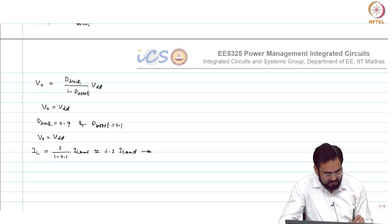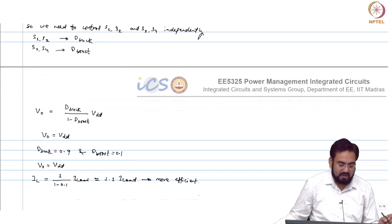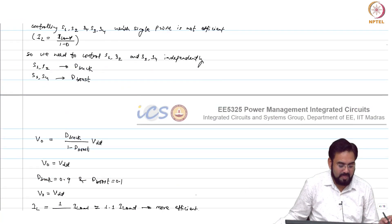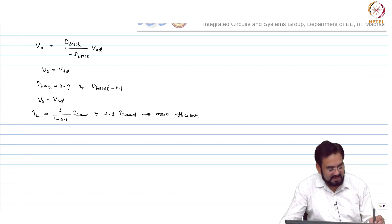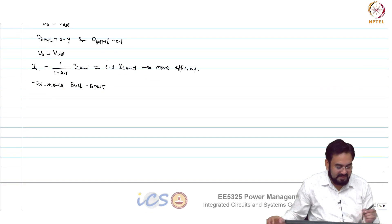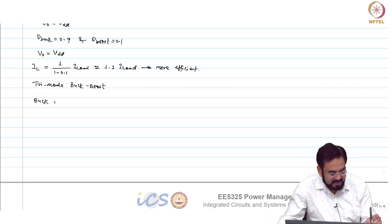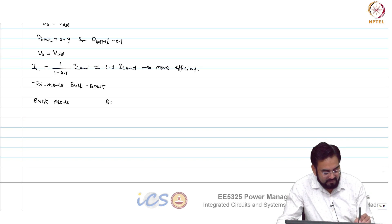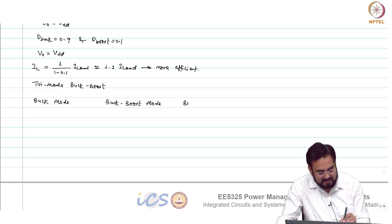So, how do we control this? There are 3 modes and this is called tri-mode buck-boost. Instead of operating all the 4 switches simultaneously, we operate them based on which region we are in. So we divide them in 3 regions: buck mode, buck-boost mode, and boost mode.